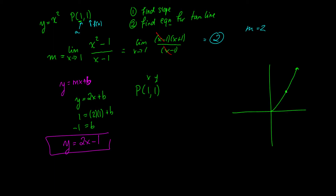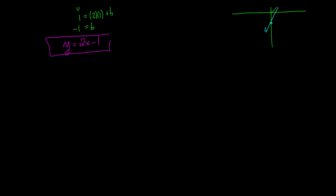Here's the point (1,1). Taking the equation 2x - 1, when x = 0, y = -1, so that's one point. The line goes across at 1 and our line looks like this — which is a pretty accurate description of a tangent line.